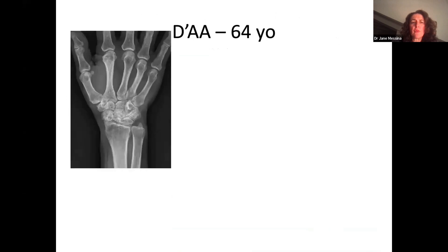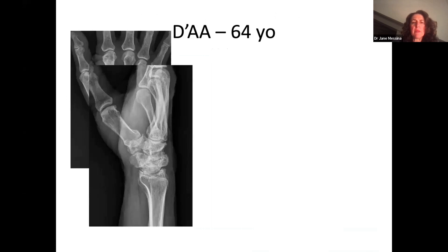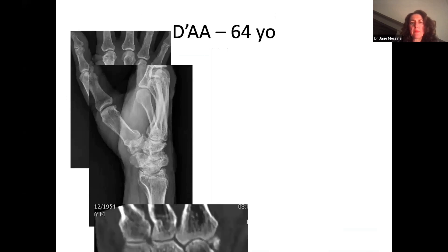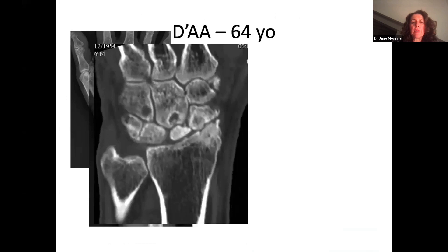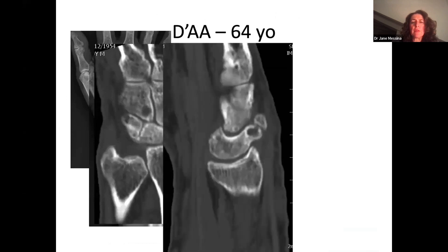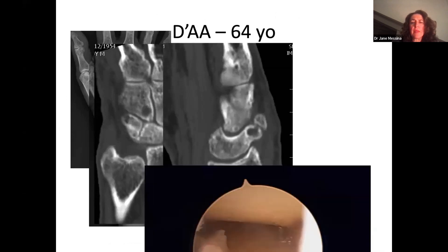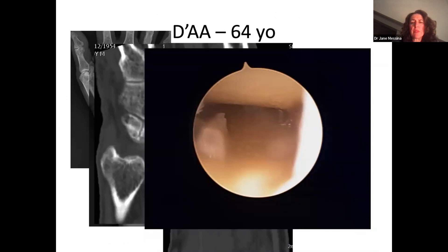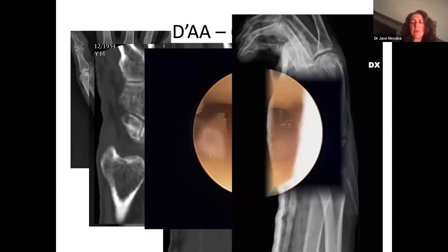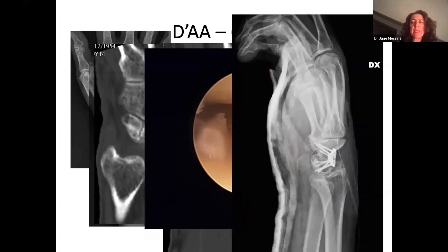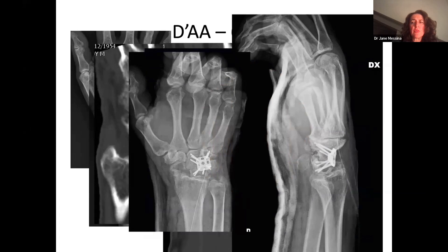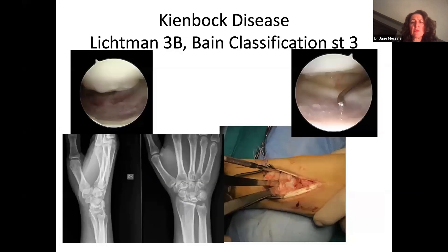Case two: a 64-year-old patient with SNAC stage 2-3, showing significant damage of the scaphoid. We were in doubt whether to perform a total wrist fusion or a four-bone fusion. At arthroscopy, we checked the radiolunate joint, decided it was still acceptable, and proceeded with a four-bone fusion. The patient was satisfied to avoid total wrist fusion and had a good outcome.